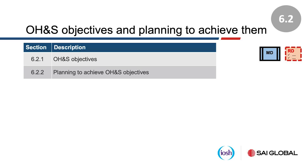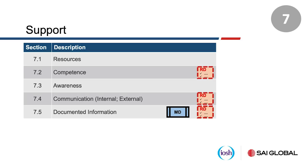When you plan for objectives, your planning to achieve must be clear in defining who's going to do the job. Have you given the resources? Have you designated responsibilities? What needs to be done exactly? What are the timelines? What are the performance indicators to be monitored and how will you measure your success? You must document these things and keep records of all of these components.